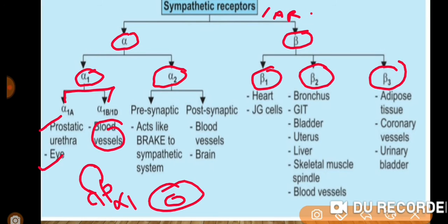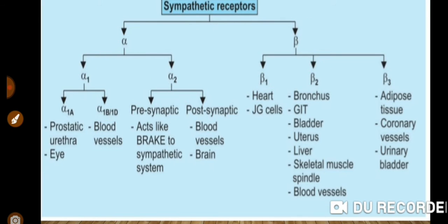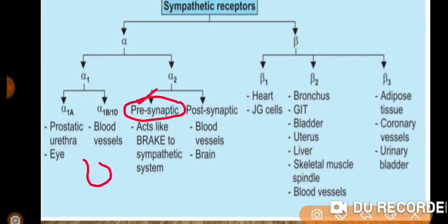Now alpha-2: alpha-2 receptors are located in the pre-synaptic nerve. If this is our nerve — the pre-synaptic nerve — and this is the post-synapse, then alpha-2 receptors are found in the pre-synaptic nerve. They act like a brake to the sympathetic system.